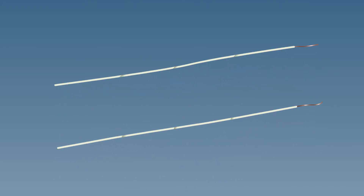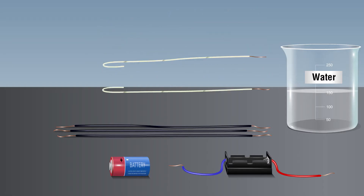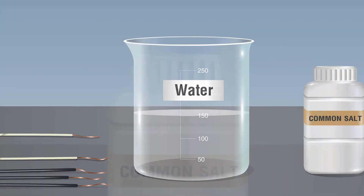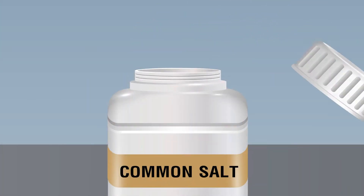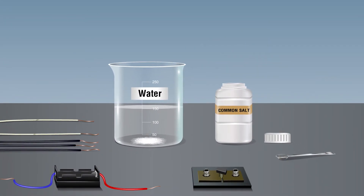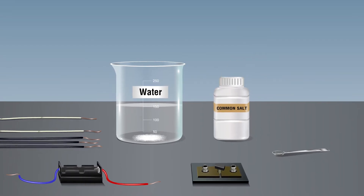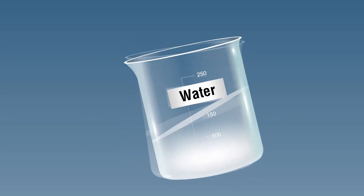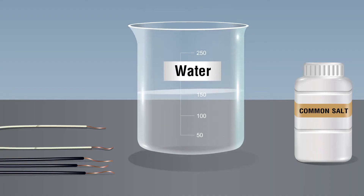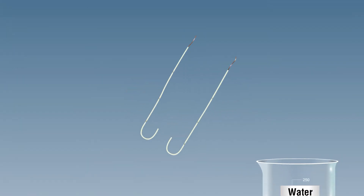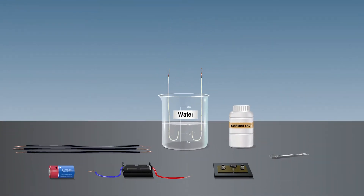Procedure: Take two long double cotton covered copper wires and fold one end of each into a U-shape. Fill the beaker about half with water. Add half a teaspoonful of common salt to the water to make it more conducting.